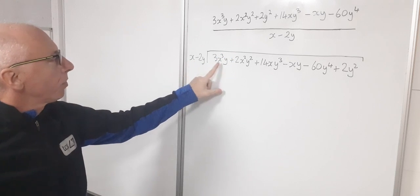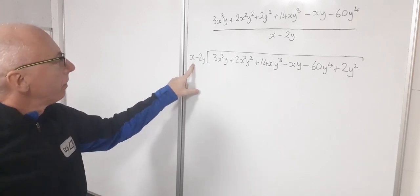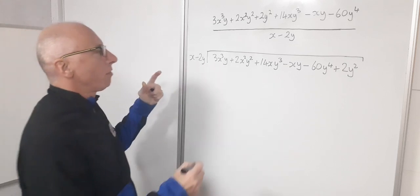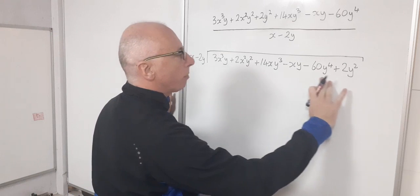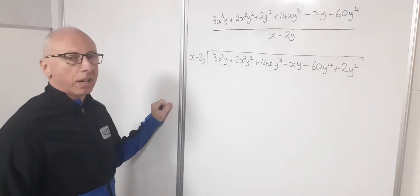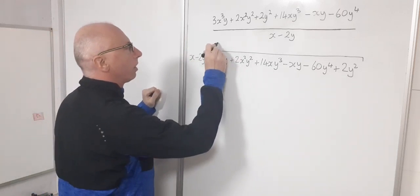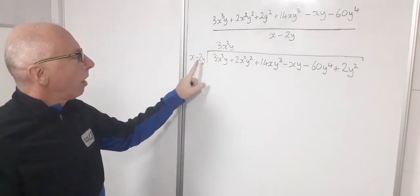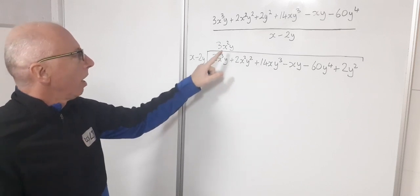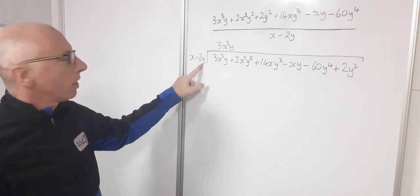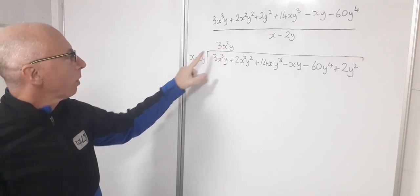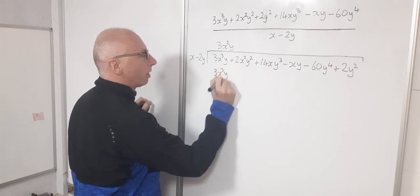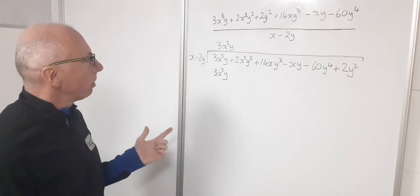Now I want to do 3x³y divided by x. Well that's going to give me 3x²y. So I'll write that in here. See there's a matching term there, 3x²y. There isn't, so I'm just going to write 3x²y at the top here. So 3x²y. And then the y here I won't divide what's inside the boxes here.